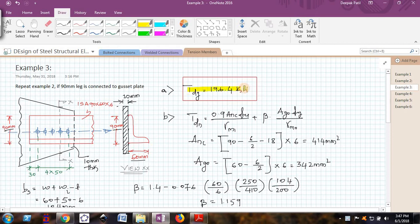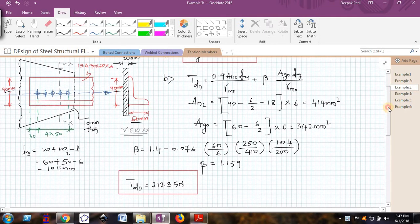the TDG will be same because the gross area of the angle will be same whether you connect a 60 mm leg or a 90 mm leg. However, the TDN will change because the net area of the connected leg and the gross area of the outstanding leg will be changing.